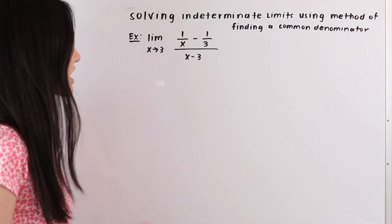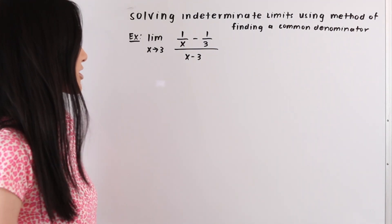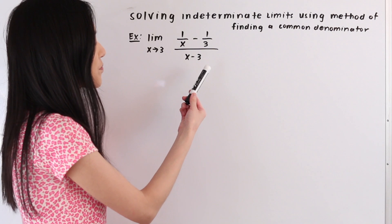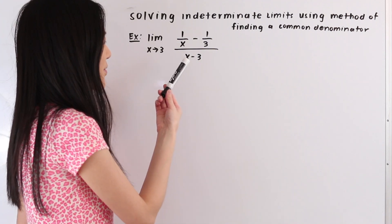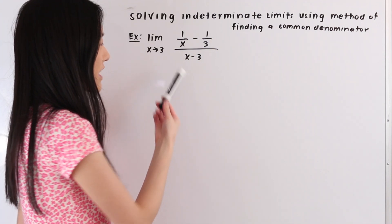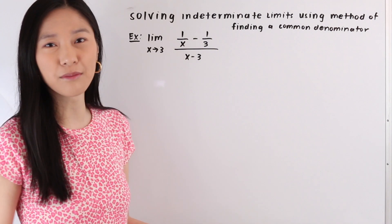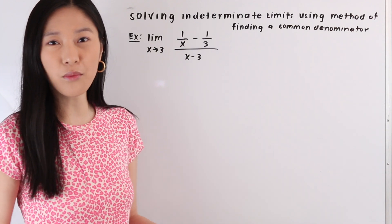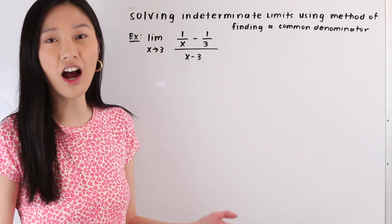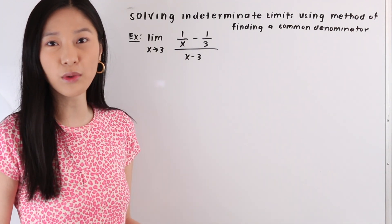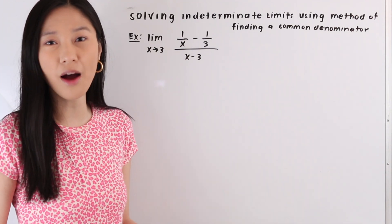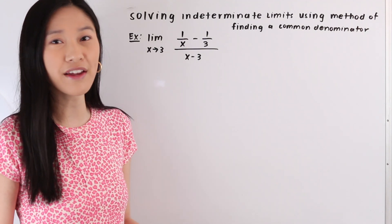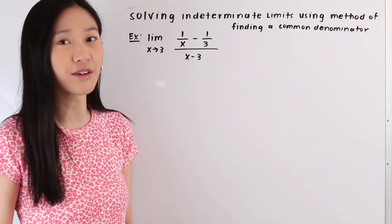The next method that we usually try is factoring, but there's nothing we can factor here, and we can't use the method of expansion because we don't really have anything in parentheses. So the next method we're going to be learning about today is the method of finding a common denominator, and we use it when we have a complex rational fraction, which basically just means that we have a fraction within a fraction.